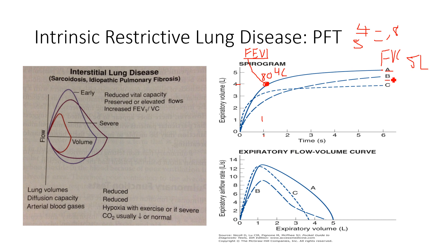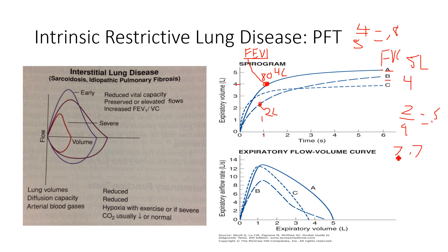In an obstructive defect, the FVC is actually pretty normal — about four liters — but at one second they're only at about two liters. So FEV1 is two liters, giving a ratio of two over four, or 0.5. We said obstructive defects show a ratio less than 0.7.